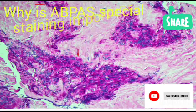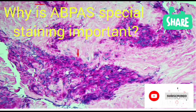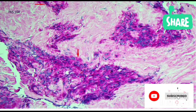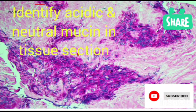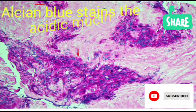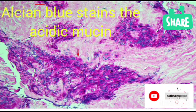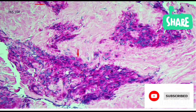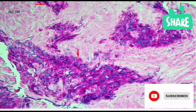Another question asks: why is ABPAS special staining important? This stain is important because of what it does. It is important because it identifies acidic and neutral mucin in tissue sections. These two stains each have their own function — Alcian Blue stains the acidic mucin, while the PAS stain stains the neutral mucin. The procedure clearly separates the acidic and neutral mucin by color and can be used to distinguish all mucin in tissue sections.